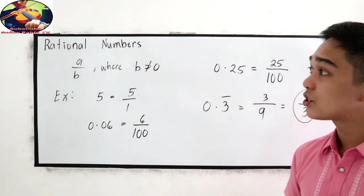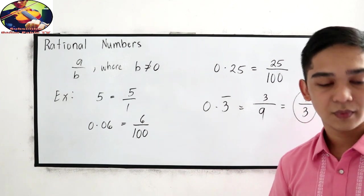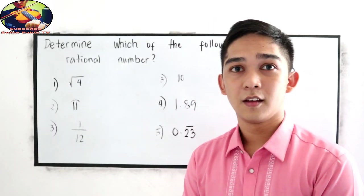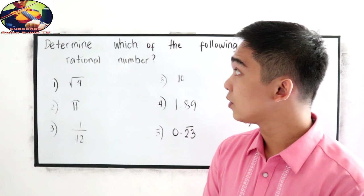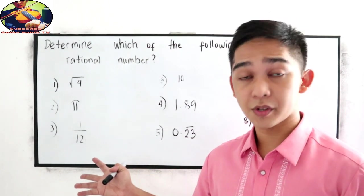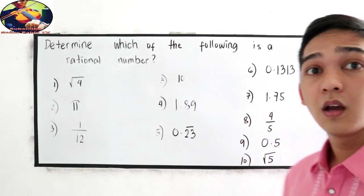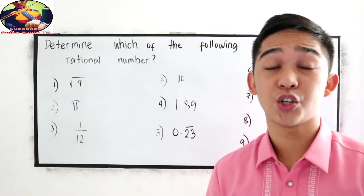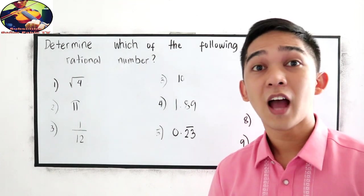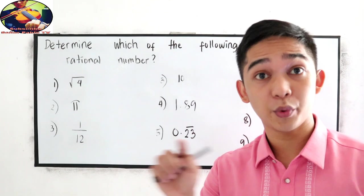So, this is the introduction of rational numbers. And now, let us determine which of the following numbers, from 1 to 10, are a rational number, and which are not. I will answer numbers 1, 2, and 3.